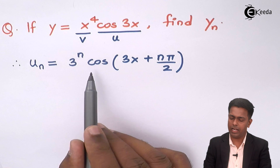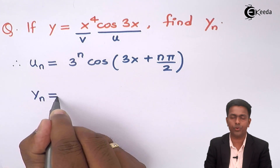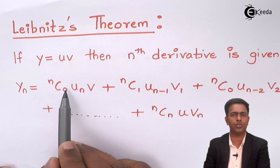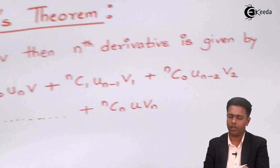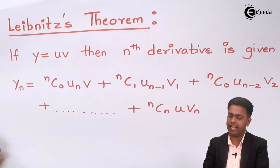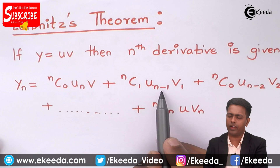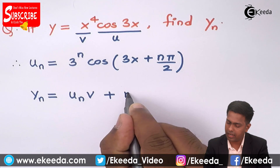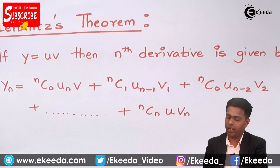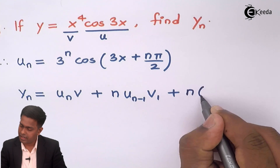Now I'll use this value in the formula. The nth derivative yₙ equals: the first term is nC0, and since nC0 is 1, I'll write uₙ·v. Next is nC1, and since nC1 is n, this term is n times u(n-1) times v1.